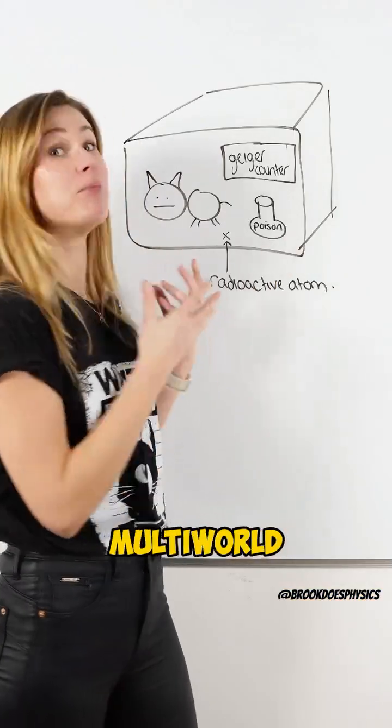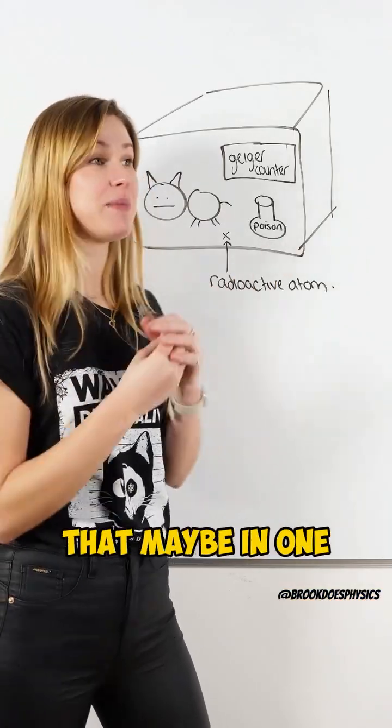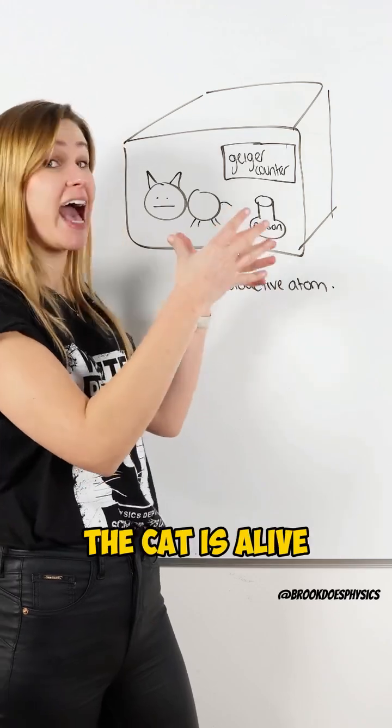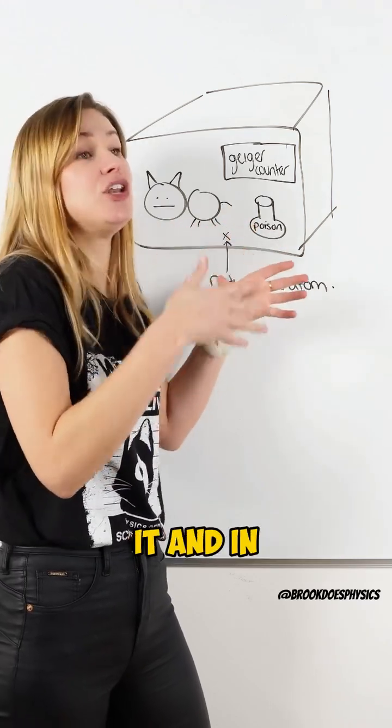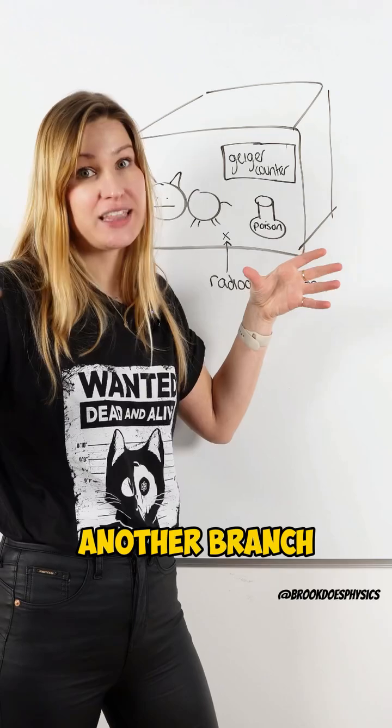So that's enabled the many-worlds interpretation. Maybe in one world, the cat is alive when we've observed it, and in another world, another branch, the cat is dead.